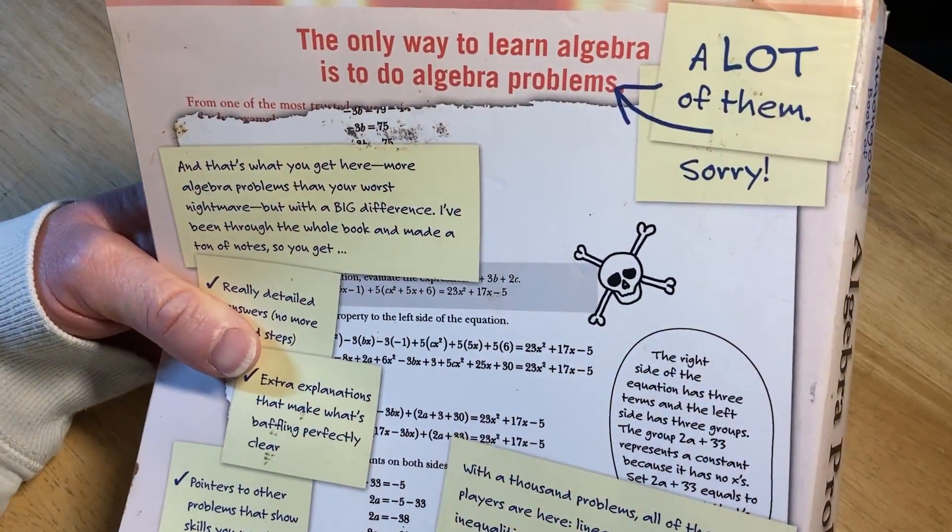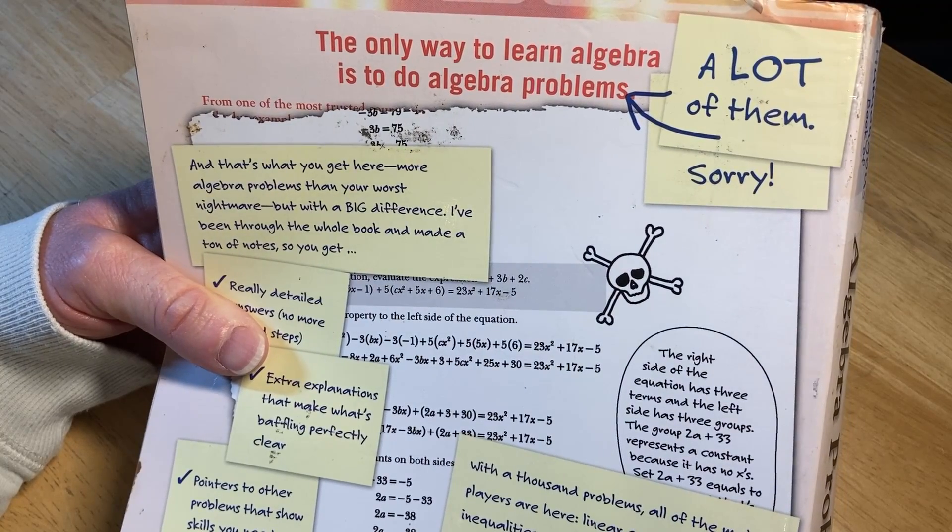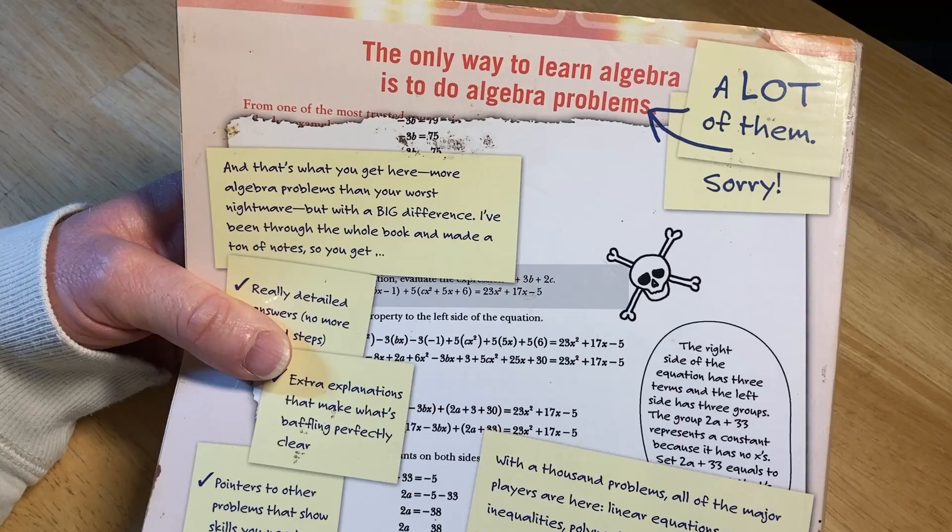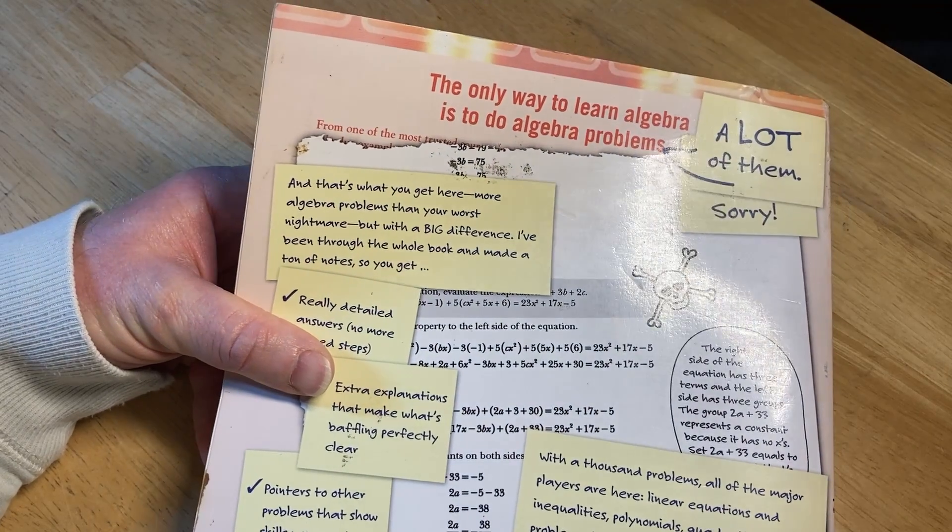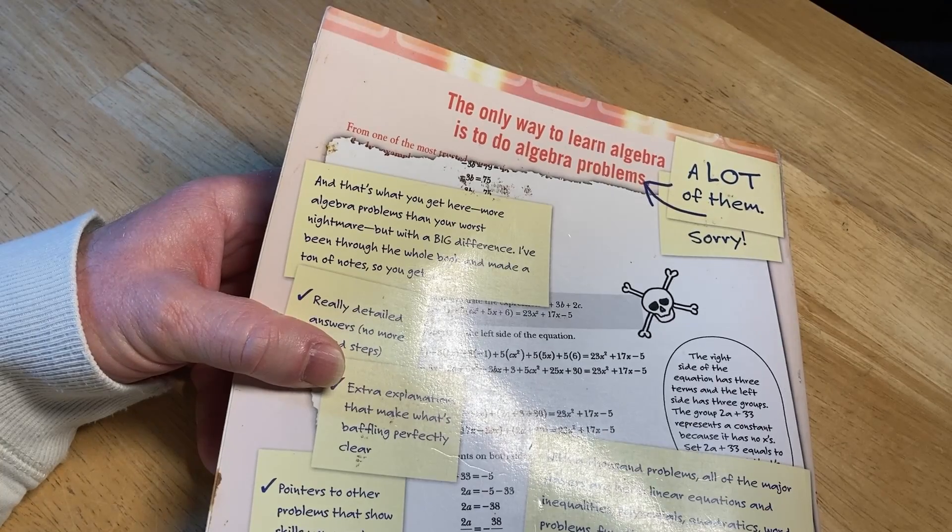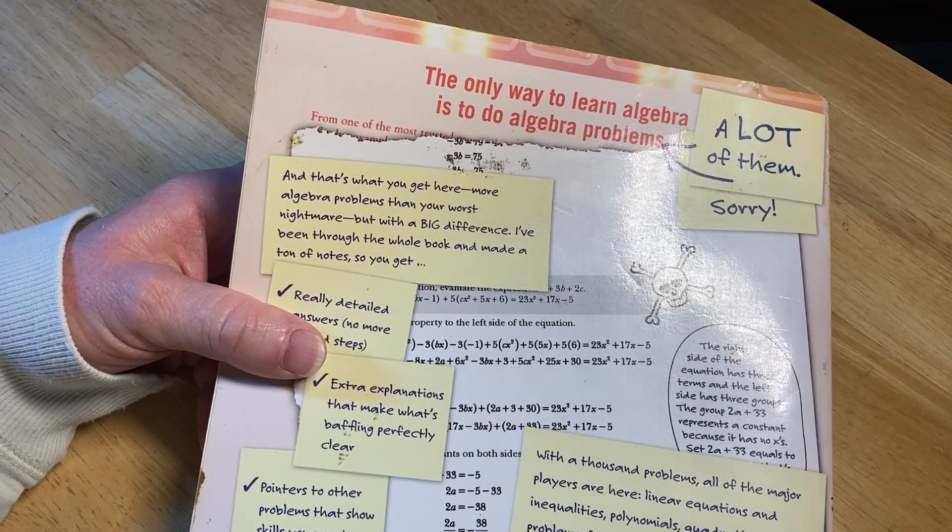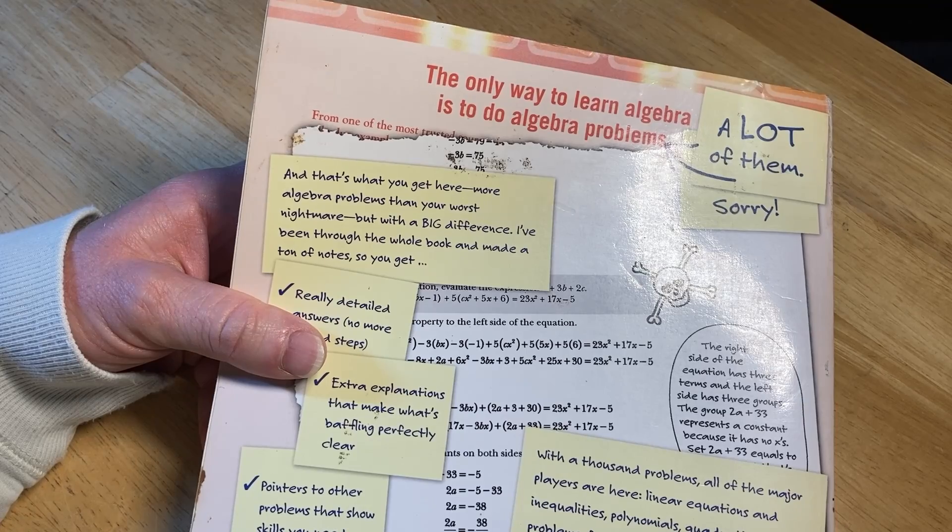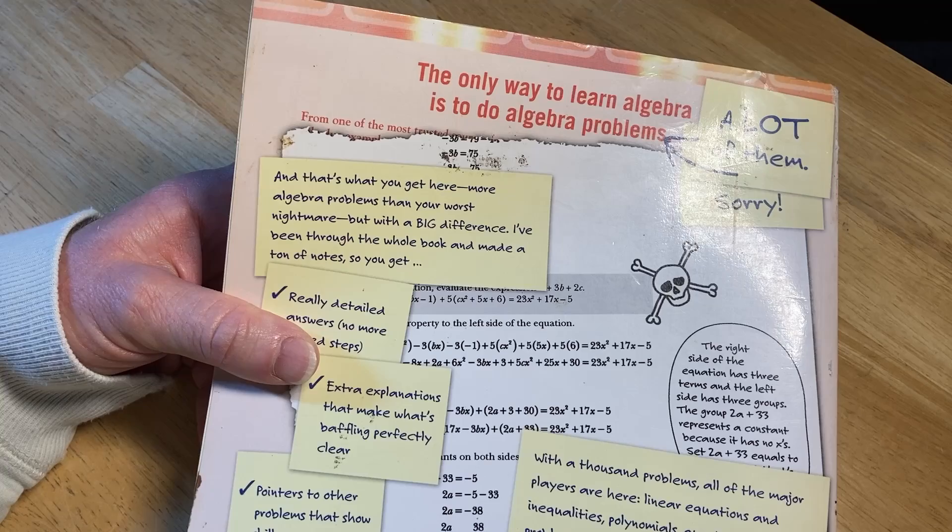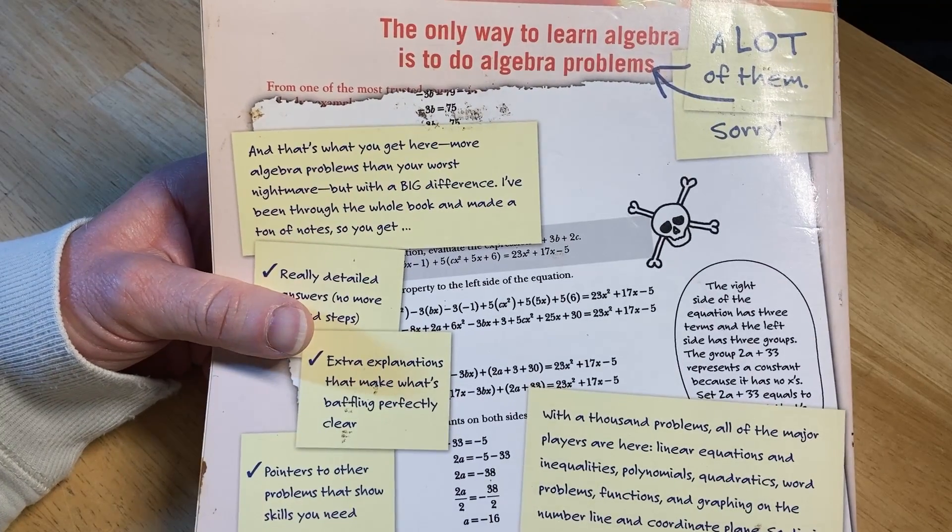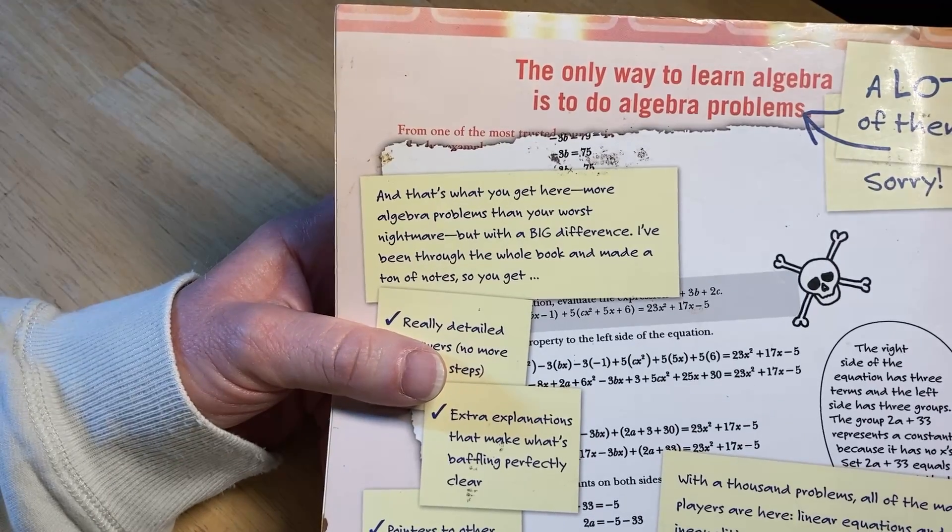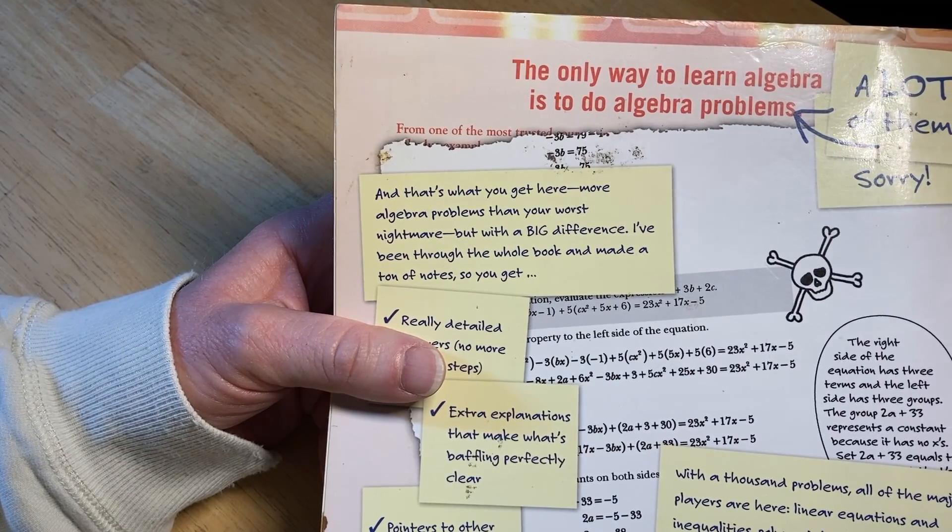The back of the book says: The only way to learn algebra is to do algebra problems, a lot of them. That's true. There's that expression, mathematics is not a spectator sport. I don't really like it because I don't watch sports that much, and I don't know if mathematics is really a sport. I think math is a mental sport. That's what you get here: more algebra problems than your worst nightmare.